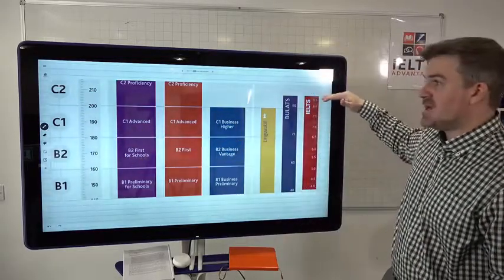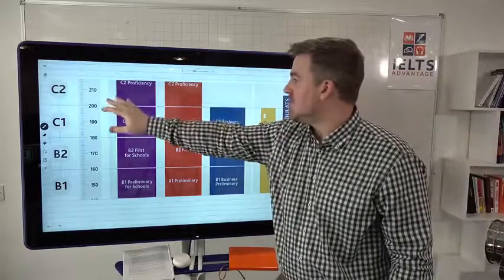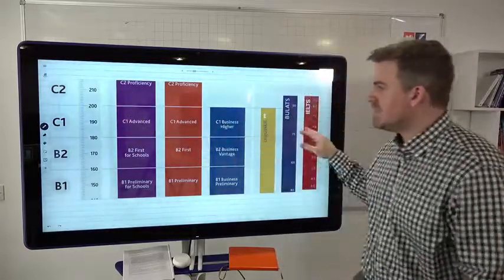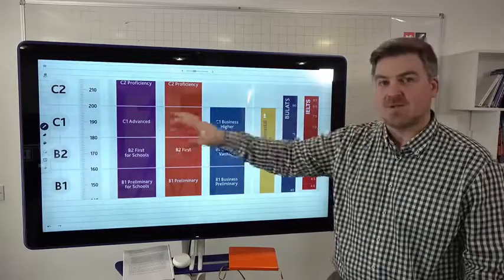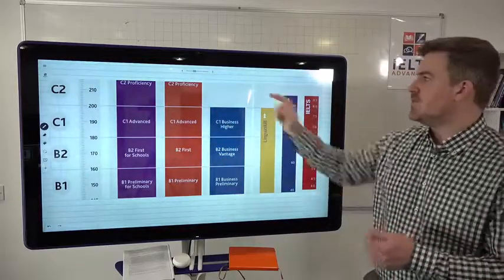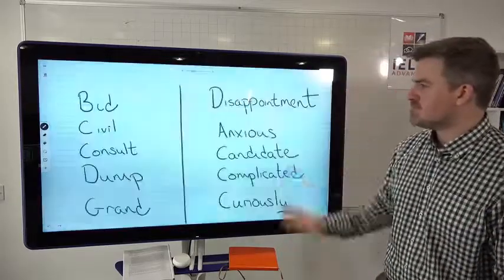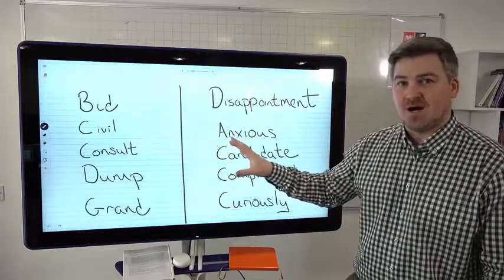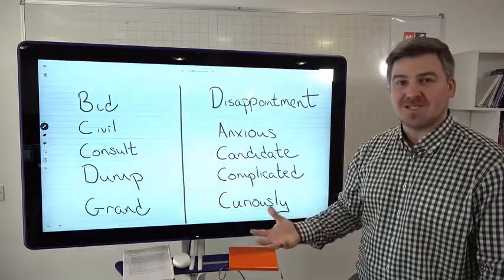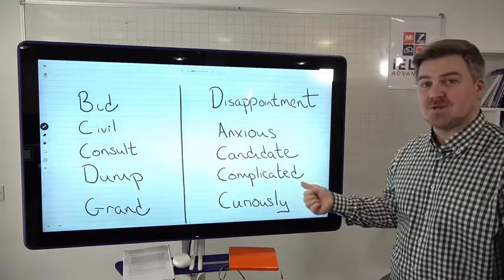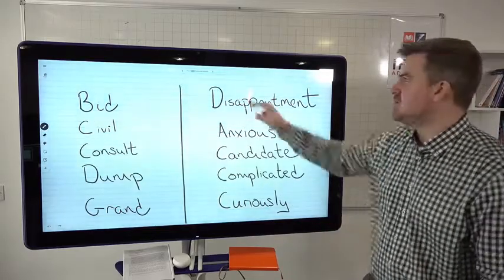Band 8, band 8.5, band 9, around a C2 level. So you're proficient. So band 7 is advanced level. So if we think about those words again, some of these words are C1 and C2 words. Some of these words are B1 and B2 words.